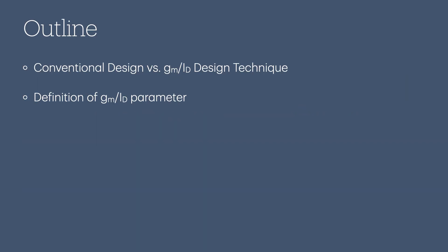This is the outline of Lecture 1. First, we will compare the conventional design method versus the proposed method, the GM over ID design technique. We will describe the advantages of using the GM over ID Technique over the conventional one. Second, we will try to define the meaning of GM over ID and its importance.